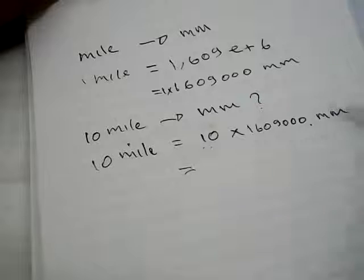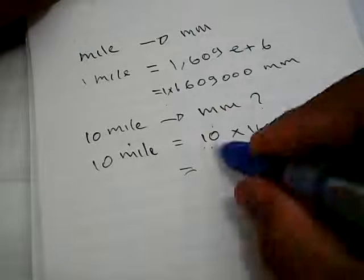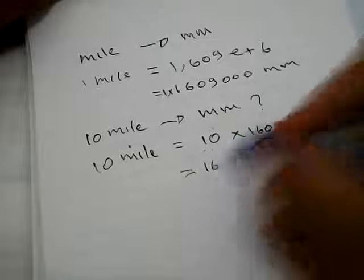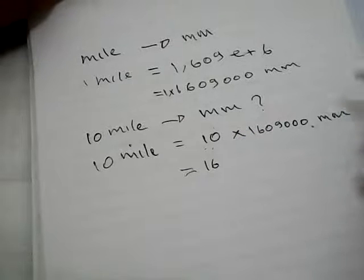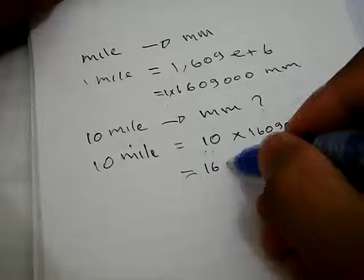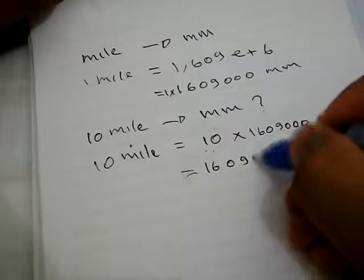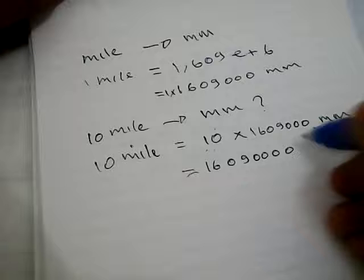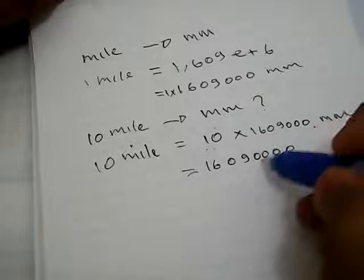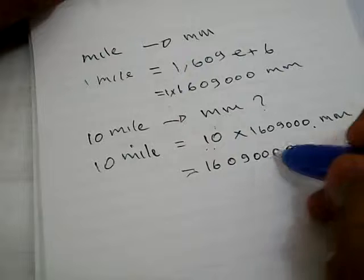Let's just go ahead and multiply the number. Ten multiplied by this number is equal to 16 million... yep, 16 million and 90,000.